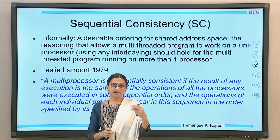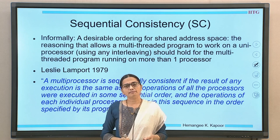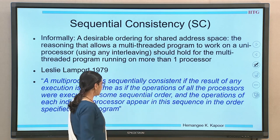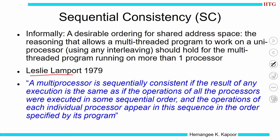That is our objective, and it was formally defined by Leslie Lamport in 1979. Lamport said: a multiprocessor system is sequentially consistent if the result of any execution is the same as if the operations of all the processors were executed in some sequential order, and the operations of each individual processor appear in this sequence in the order specified by its program. We are saying the system is sequentially consistent if the result is the same as if operations were executed in some sequential order.